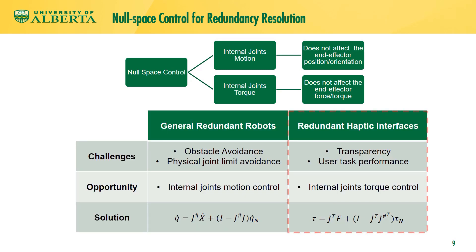Generally, robot redundancy is used to control the internal motion of joints for obstacle avoidance or joint limit avoidance. For this, the relationship ẋ = J q̇ is used to design q̇ for a given Cartesian space velocity considering the redundancy. For redundant haptic interfaces, however, we propose to control the torques applied at the joints in order to obtain the highest transparency and user task performance. For this, the relationship τ = Jᵀ f is used to design the joint torque vector τ for a given Cartesian space force-torque vector f.